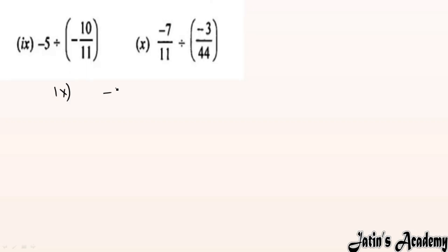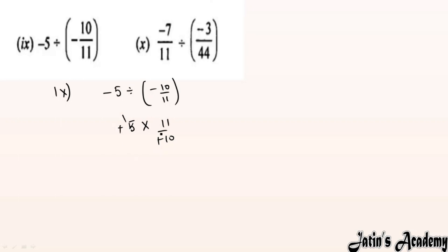Next we are having the 9th part. We are given minus 5 ÷ (minus 10/11). Keep minus 5 as such, divide converts to multiply, next term takes reciprocal. Minus and minus cancel, 5 and 10 simplify. Answer: 11/2.